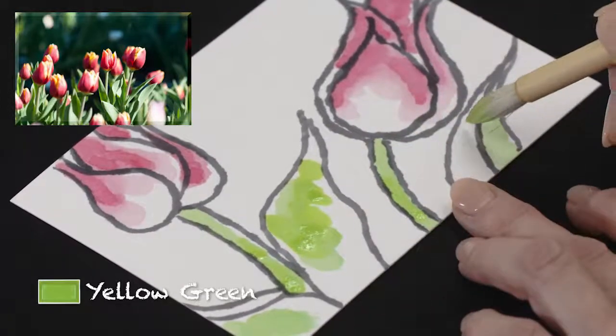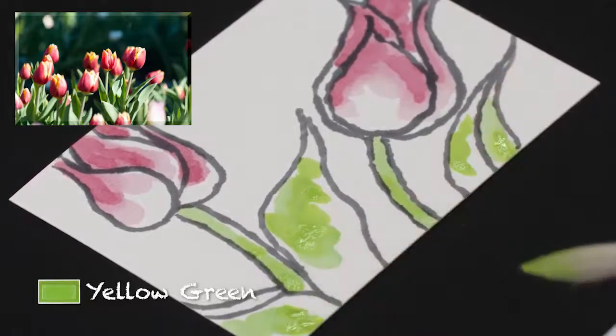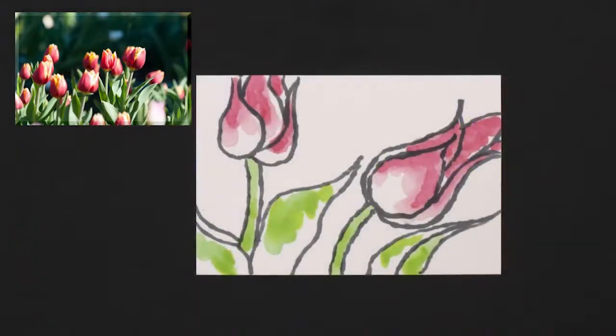Using the very wet coloring brush, add yellow green here and there on the stalk and leaves. Be sure to leave some blank space here, too.